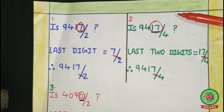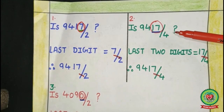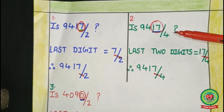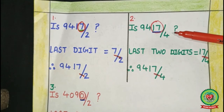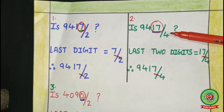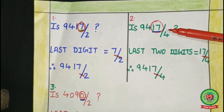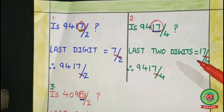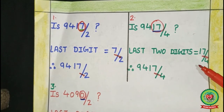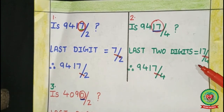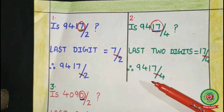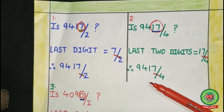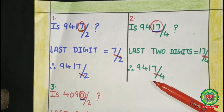Example number 2: Is 9,417 divisible by 4? First we have to find the last 2 digits. The last 2 digits are 17, and 17 is not divisible by 4. Therefore, 9,417 is not divisible by 4.